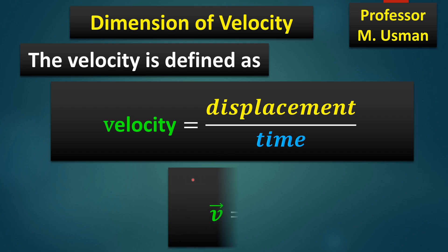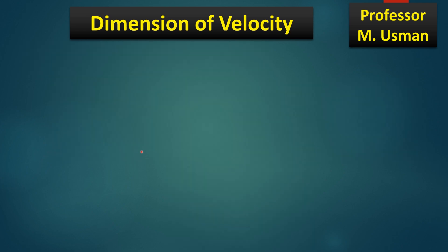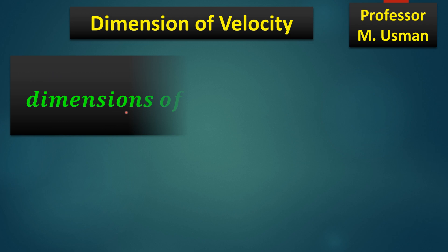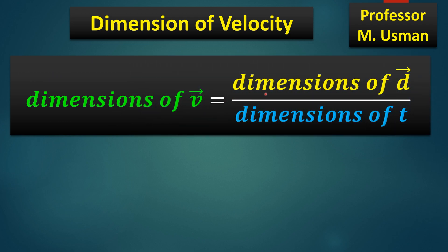We can also write it as: velocity V is equal to displacement D divided by time T, where D is the symbol for displacement and T is the symbol for time.